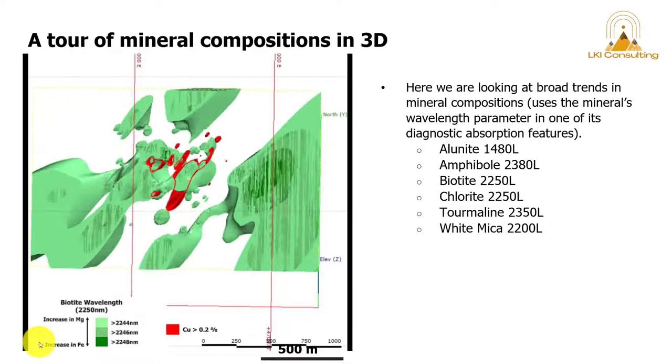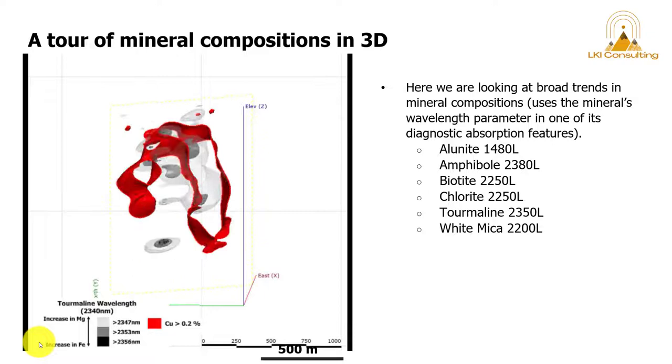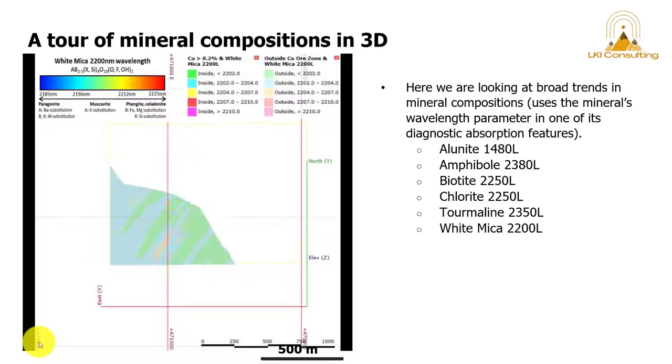Percent shell. Now this is the biotite 2250 nanometer feature, again the copper grade shell in red. And finally we're looking at tourmaline 2340 nanometer wavelength with the copper shell.